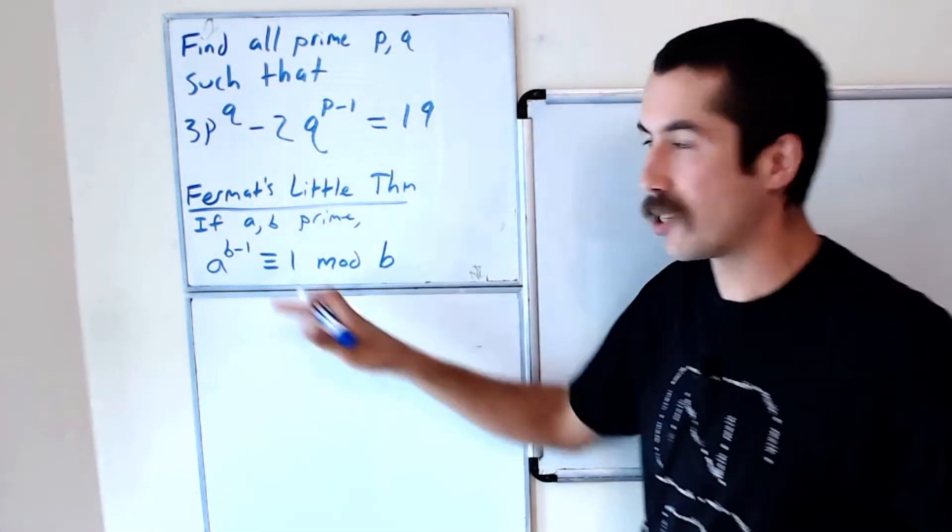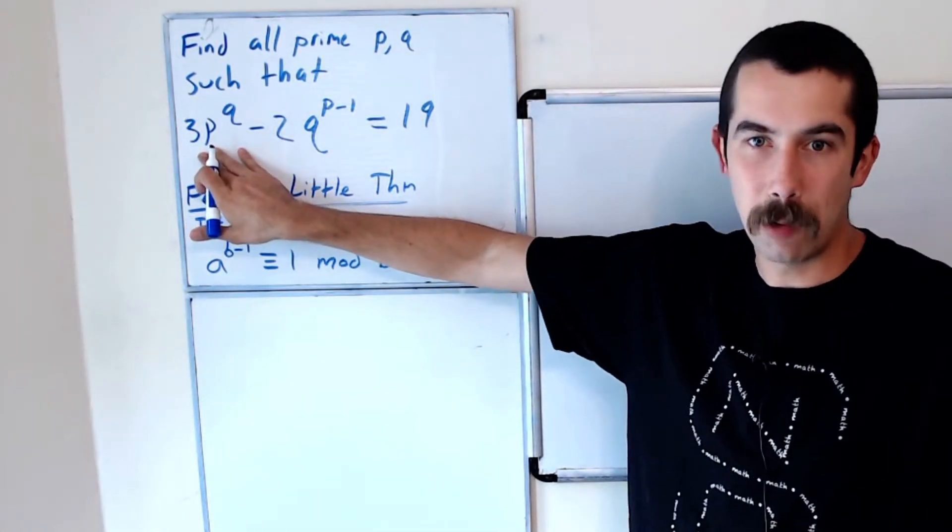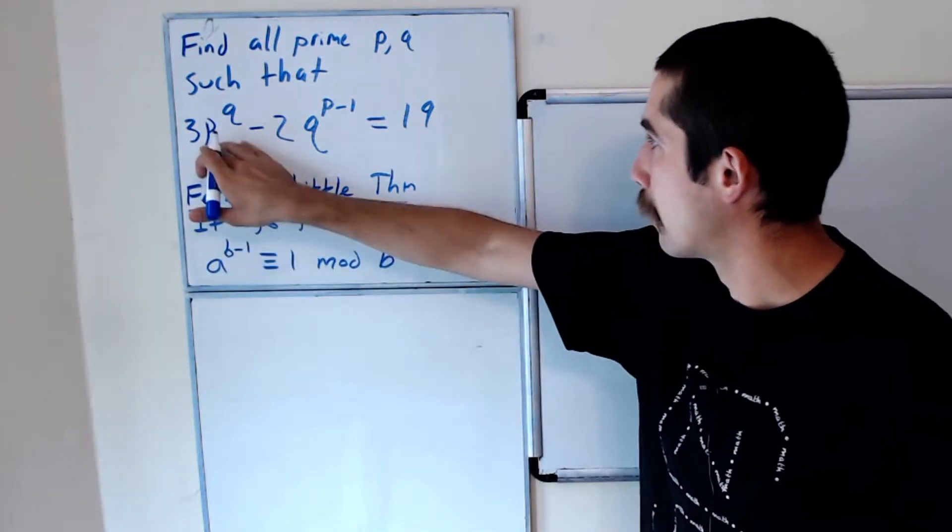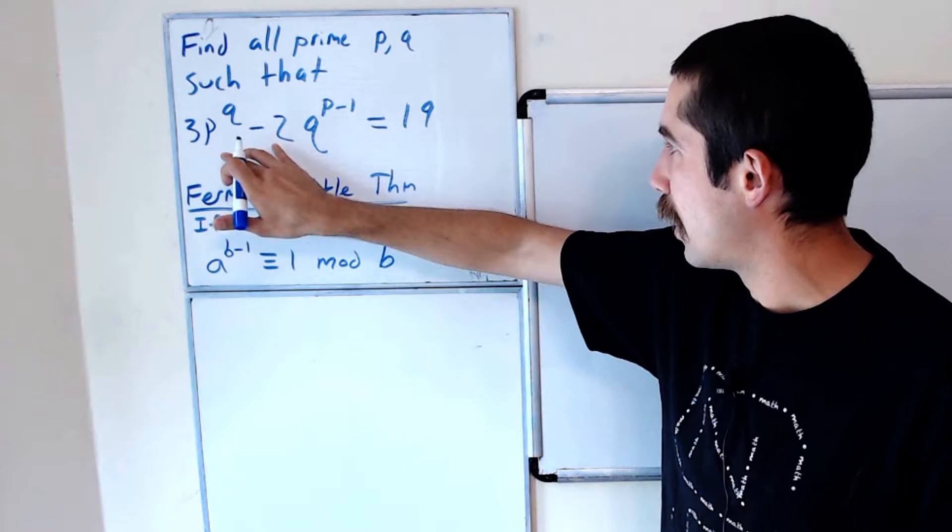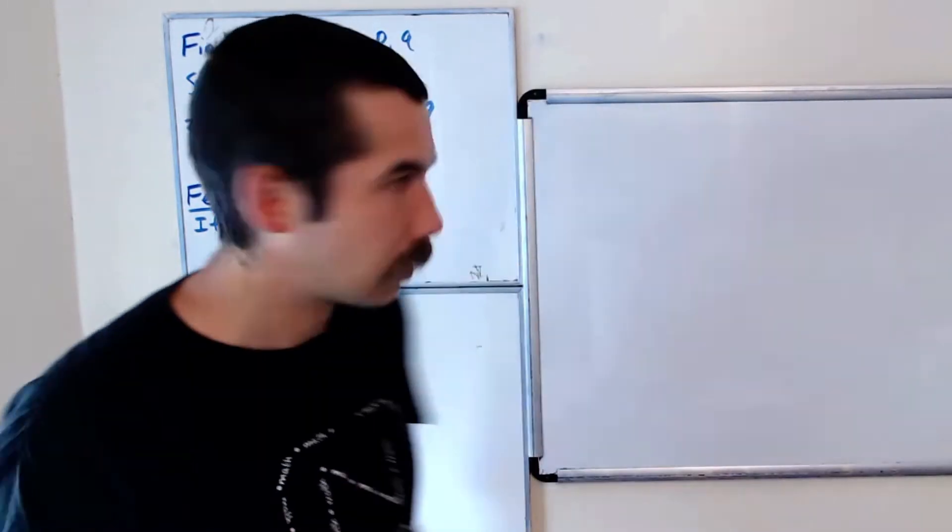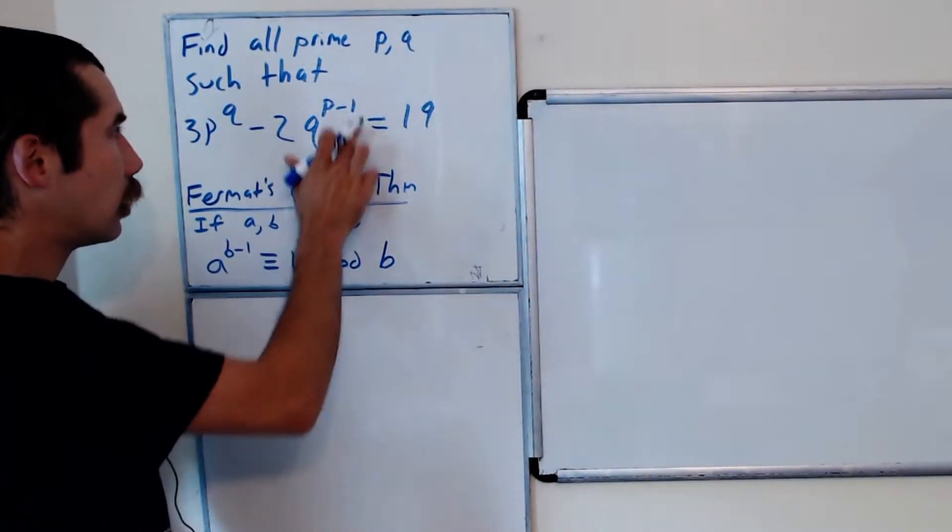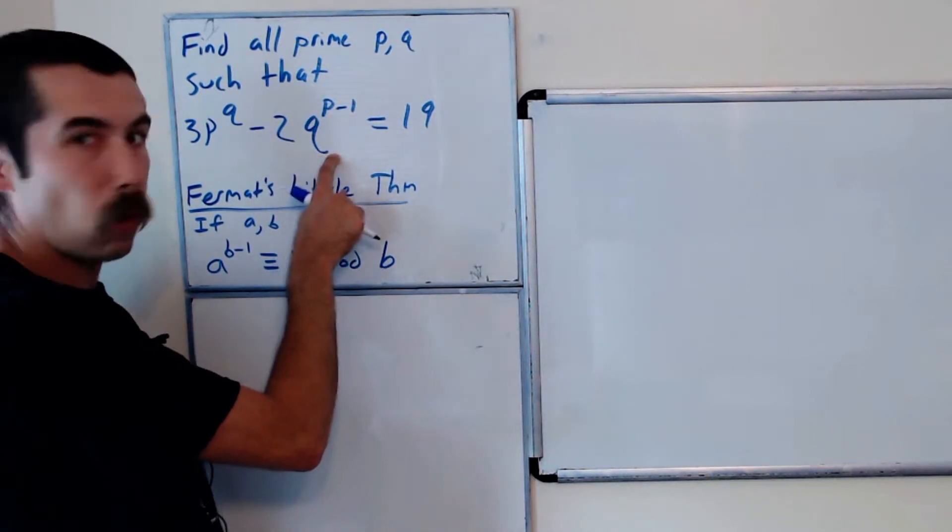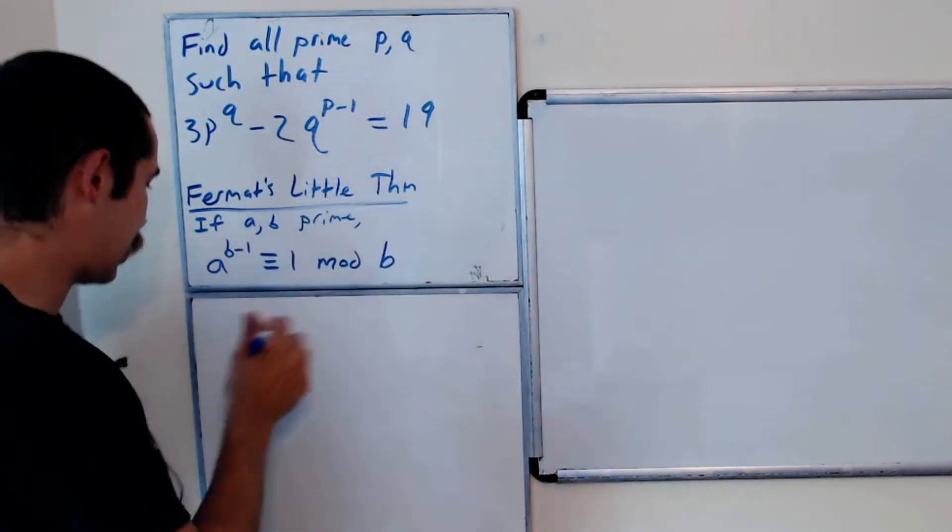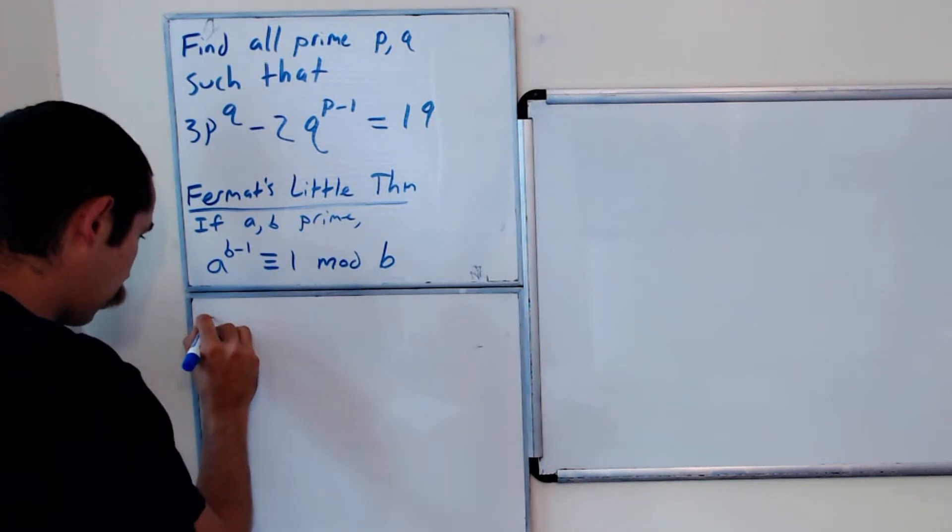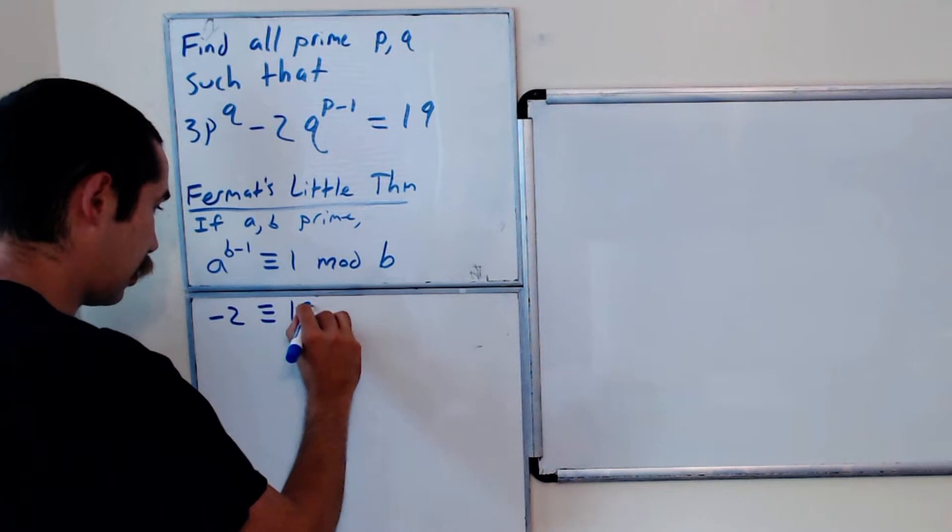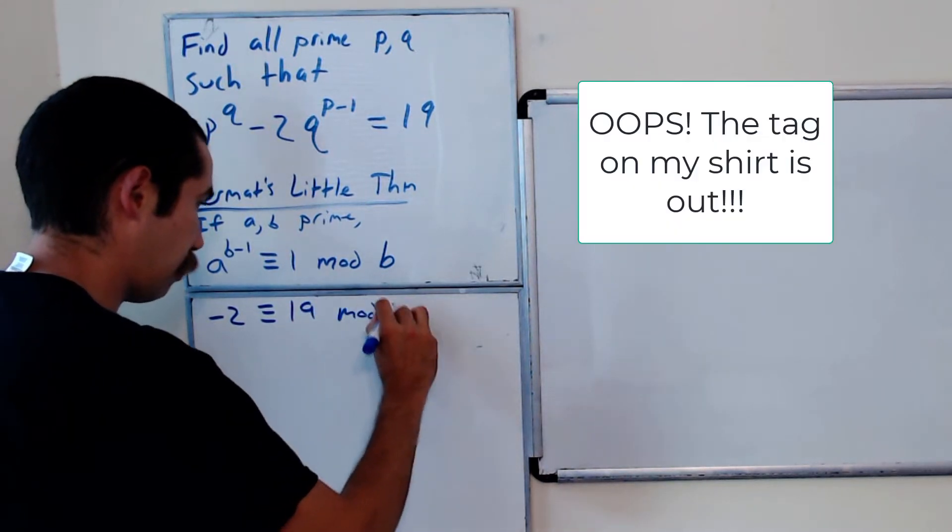So mod p, 3p^q is just 0 mod p. What does mod mean? It's like the remainder if you divide by p. So this is 0 mod p, and then using Fermat's Little Theorem, this part here is 1 mod p, so this whole thing is -2 is congruent to 19 mod p.